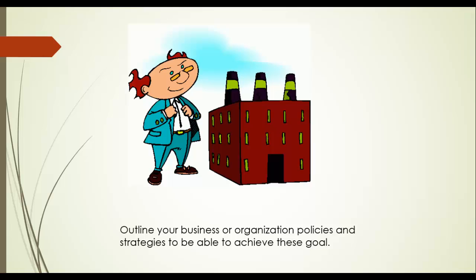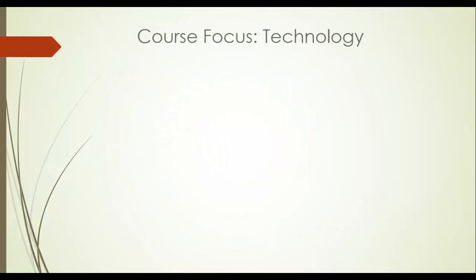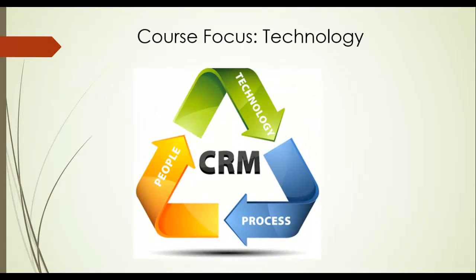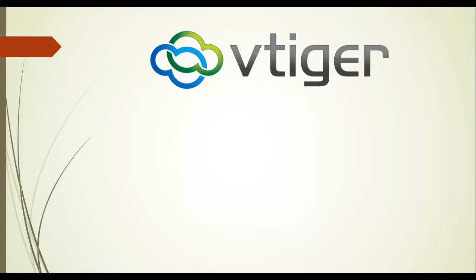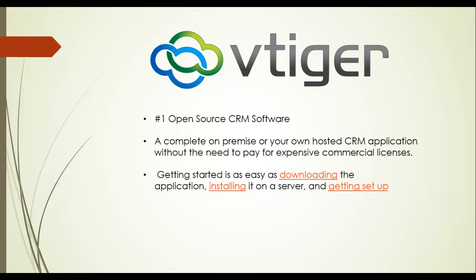This course will only help you in terms of technology — that is, software that would automate business processes like marketing, sales automation, and customer care or support. VTiger is one of them. It's the number one open source CRM software — a complete on-premises or self-hosted CRM application without the need to pay for expensive commercial licenses.